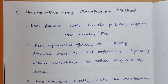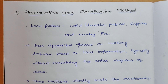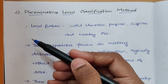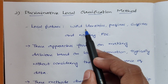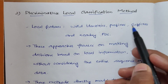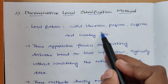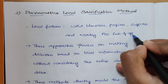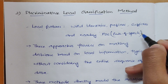Hi guys, welcome back to my channel. In the previous video I discussed what generative sequence classification method is, and in this video I am discussing about the discriminative local classification method. Before knowing what this method is, you have to know about what local features are. Local features are nothing but word entities, prefixes, suffixes, or the nearby POS — POS is nothing but parts of speech.